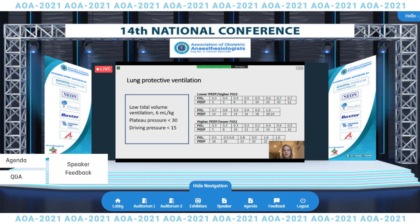Following this single-center study, a multi-center study known as the ARDSNet enrolled over 800 patients and assigned them to low tidal volume ventilation at 6 mL/kg versus conventional ventilation at 12 mL/kg. Enrollment was stopped early because the investigators also demonstrated improved survival in the low tidal volume ventilation group and a higher number of ventilation-free days following randomization. Following these studies emerged the low tidal volume, low FiO2, and high PEEP strategy, with additional goals of maintaining a plateau pressure less than 30 and a driving pressure less than 15.